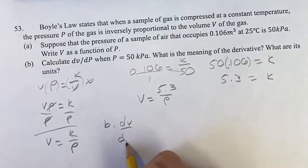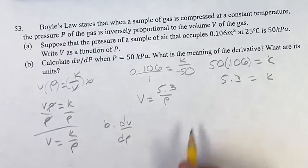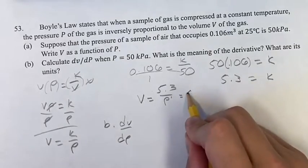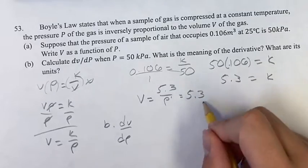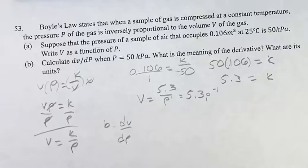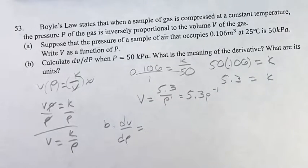So dV/dP is not super clear based on our power laws, unless we think of this as P to the 1. If we bring it to the numerator, we multiply the exponent by negative 1, which gives 5.3P to the negative 1. Now this is something we can more easily find the derivative of.